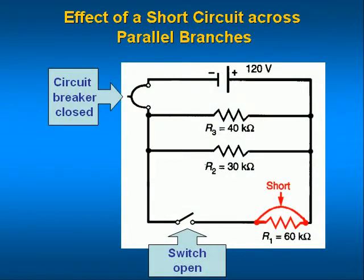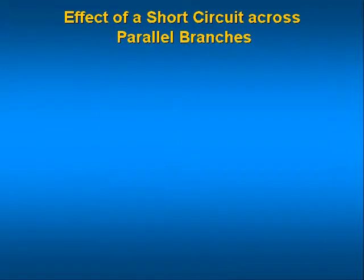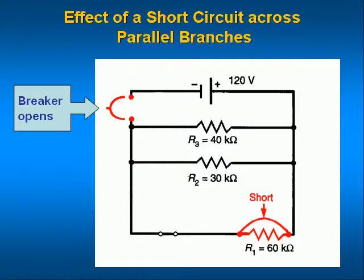This circuit has resistor R1 shorted. A switch in the branch with R1 will be used to connect branch 1 into the circuit. The effects of a shorted branch in a parallel circuit are not very pretty, because you have shorted the power source and the maximum possible current will flow until something breaks. Hopefully the circuit breaker will trip. The circuit breaker opened and stopped the current flow — the circuit and the power source have been saved.